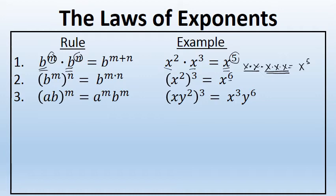The third law of exponents is what to do when you have more than one factor inside of a quantity that's being raised to a power. Here we have ab to the m power, which equals a to the m times b to the m. For example, xy squared raised to the power of 3 — each factor inside the parentheses gets raised to the third power. So x gets raised to the third power and becomes x to the third. Additionally, y squared gets raised to the third power. This harkens back to law 2 — you're raising a power to a power, so the exponents must be multiplied. That gives y to the sixth power.